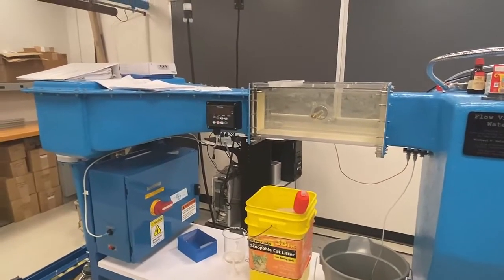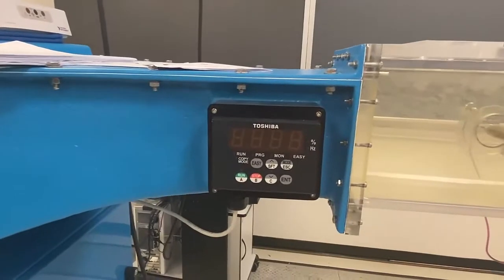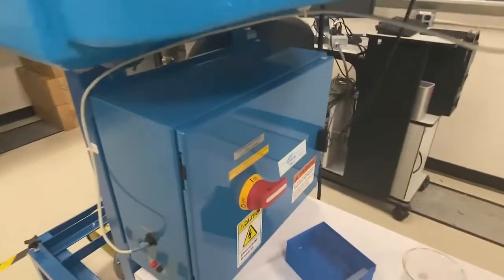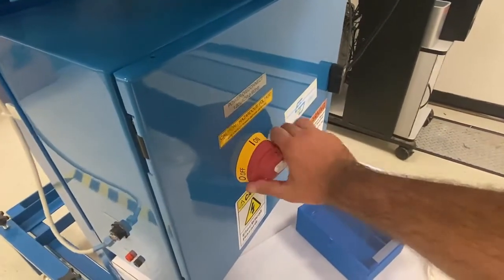Turning on the water tunnel. The first thing you should do is look at the motor controller here. If it is not powered, you're going to come down to this position and flip this switch to on.